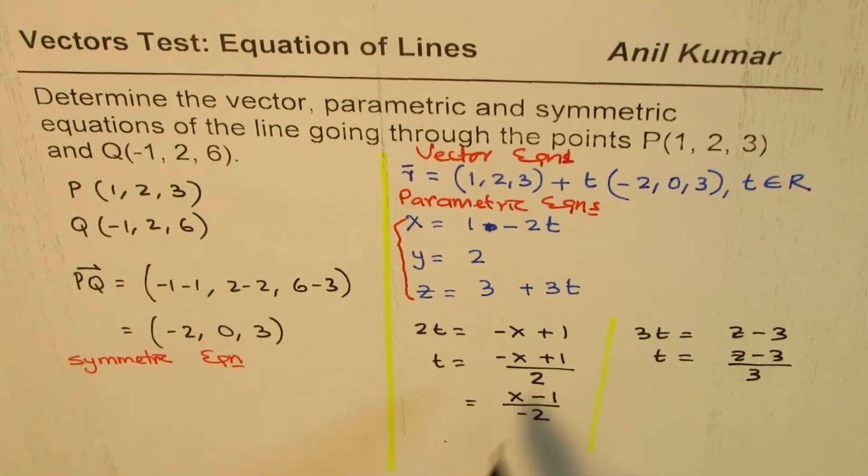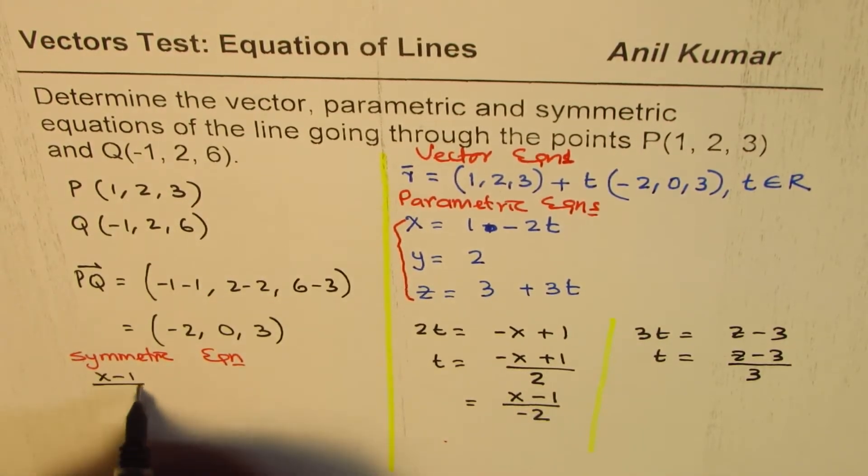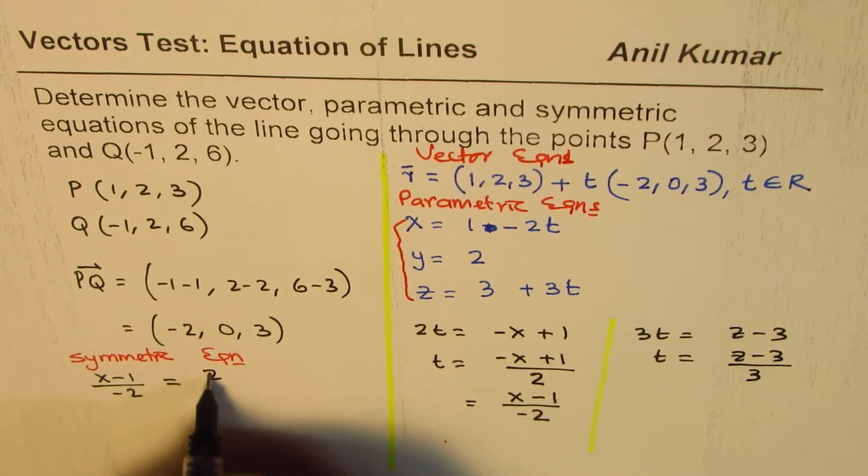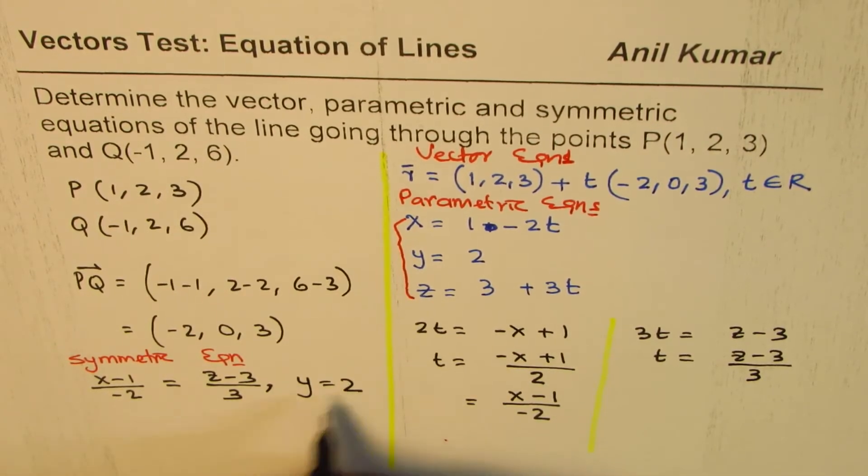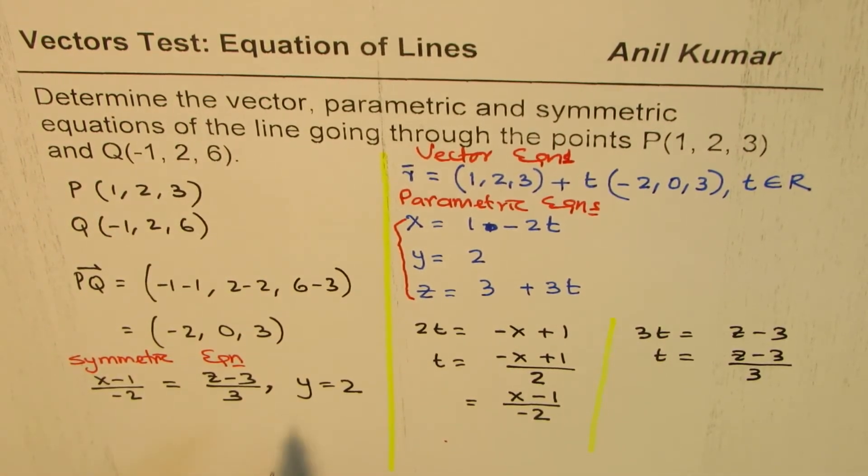So you could write this equation now as (x - 1)/(-2) equals (z - 3)/3, and y equals 2. So that becomes the symmetric equation for the given line.